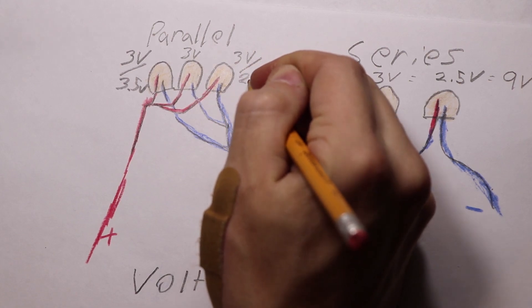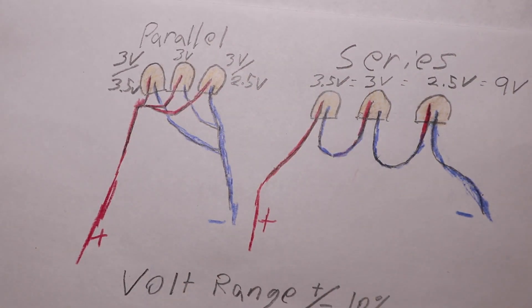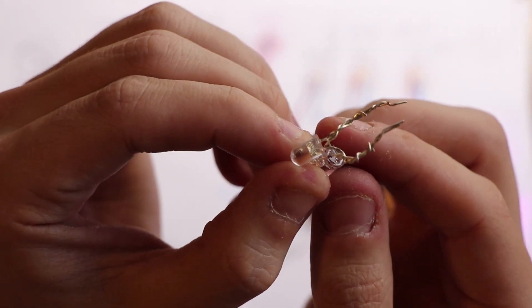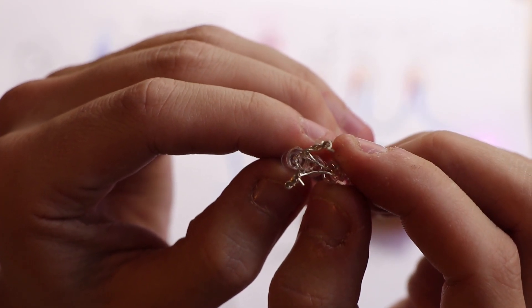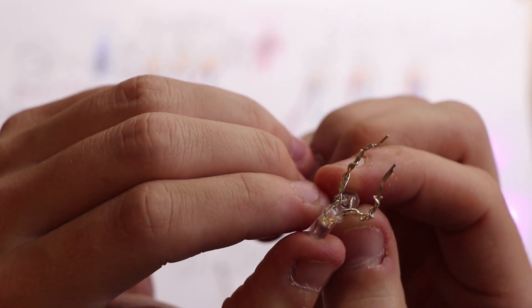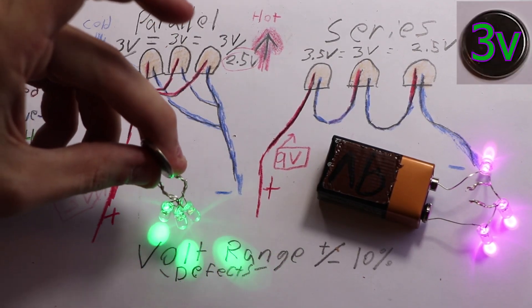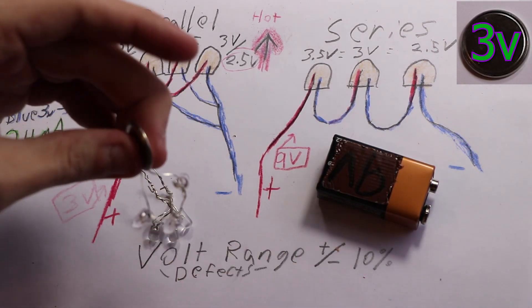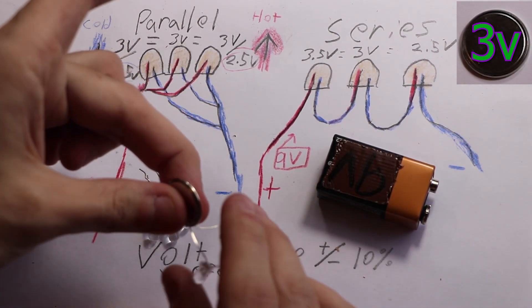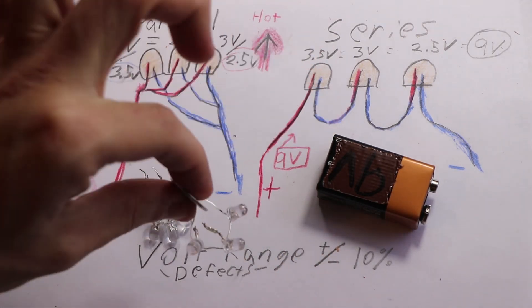Here is that parallel connection of the three LEDs again, this time with the resistor taken off. By using the 3-volt watch battery it will power that parallel connection, but it will not power the series connection because that one's 9 volts.